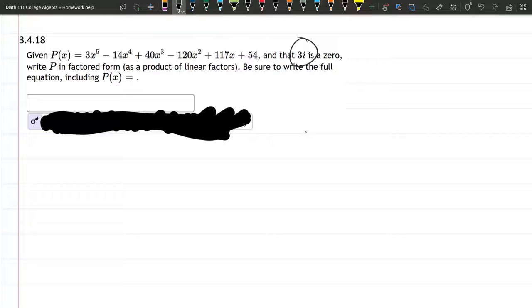Normally we would use the rational zero theorem, find a zero, divide by the factor, reduce the degree by one, find a zero, divide by that factor, reduce the degree, and so on. Here we're given some information that will help us get started a little faster.